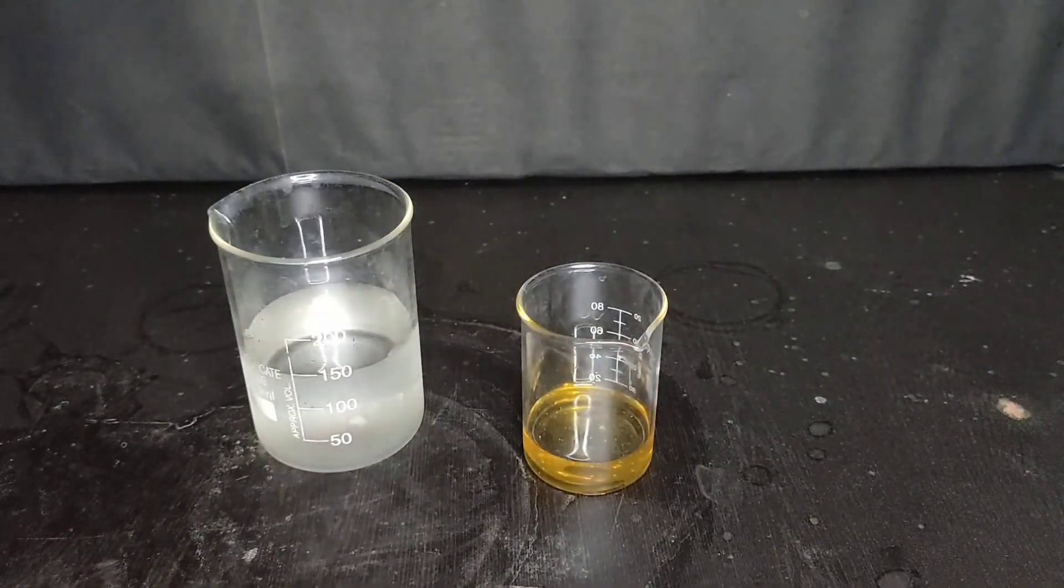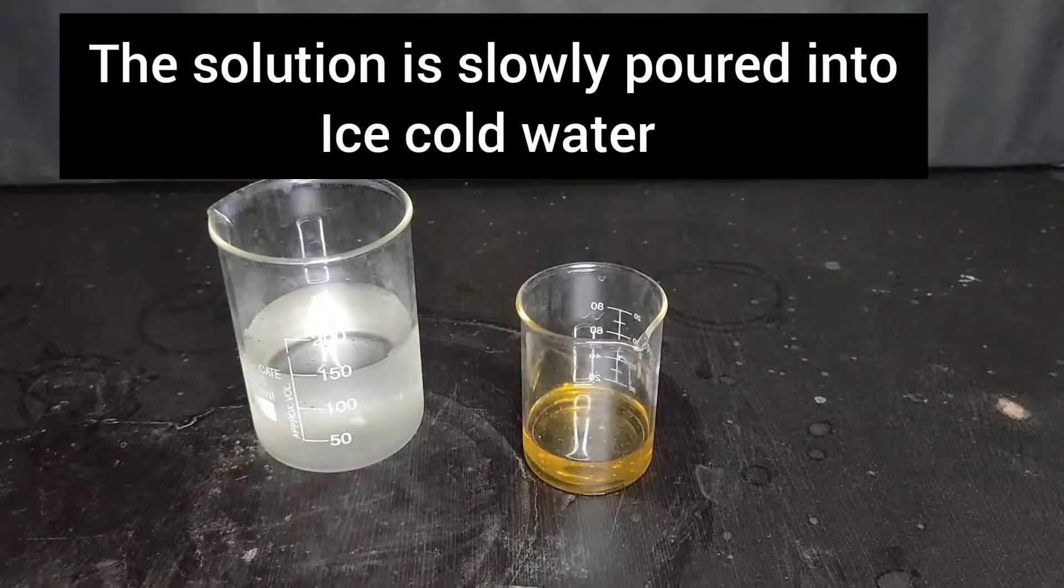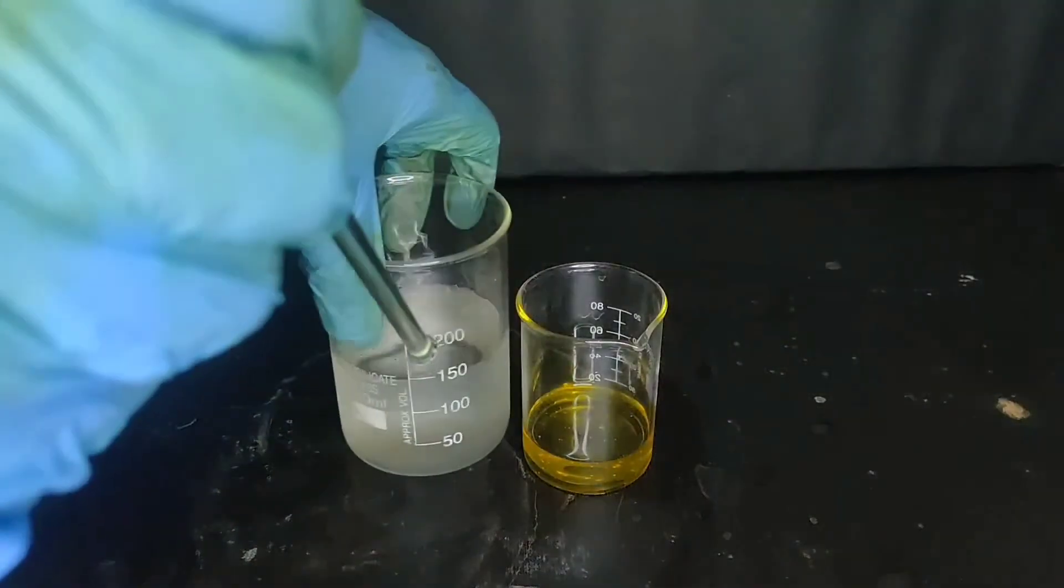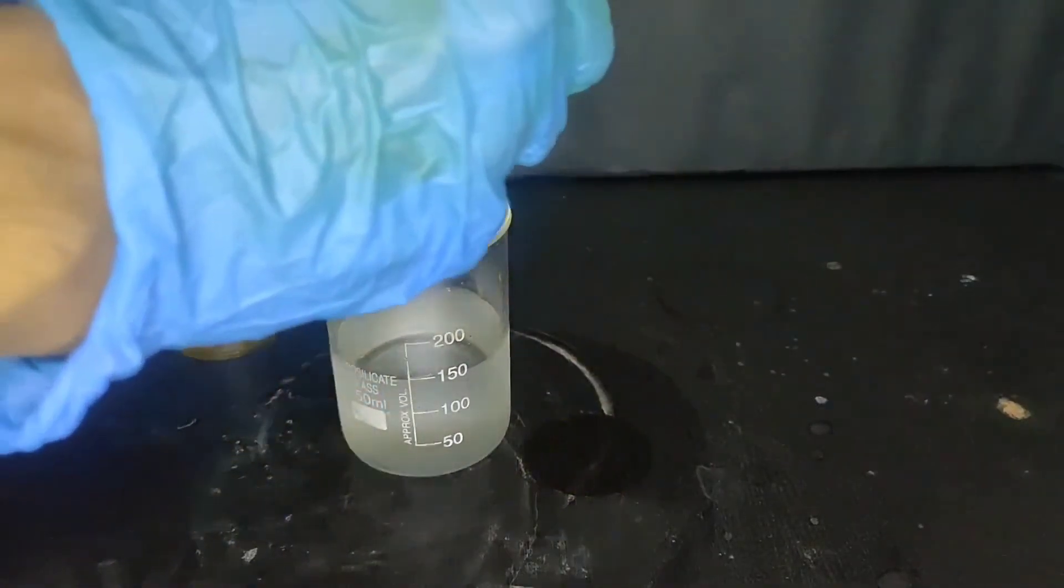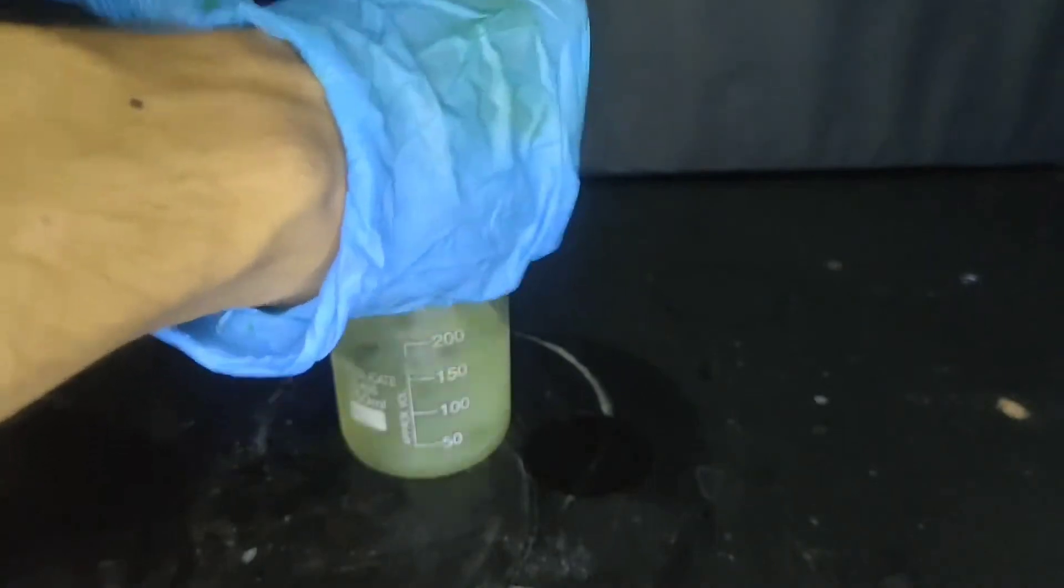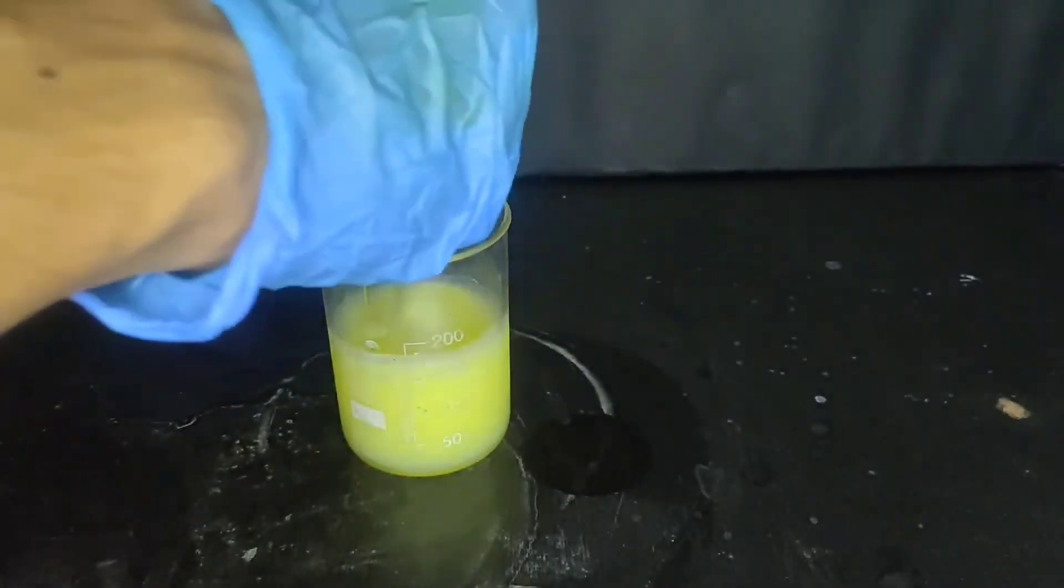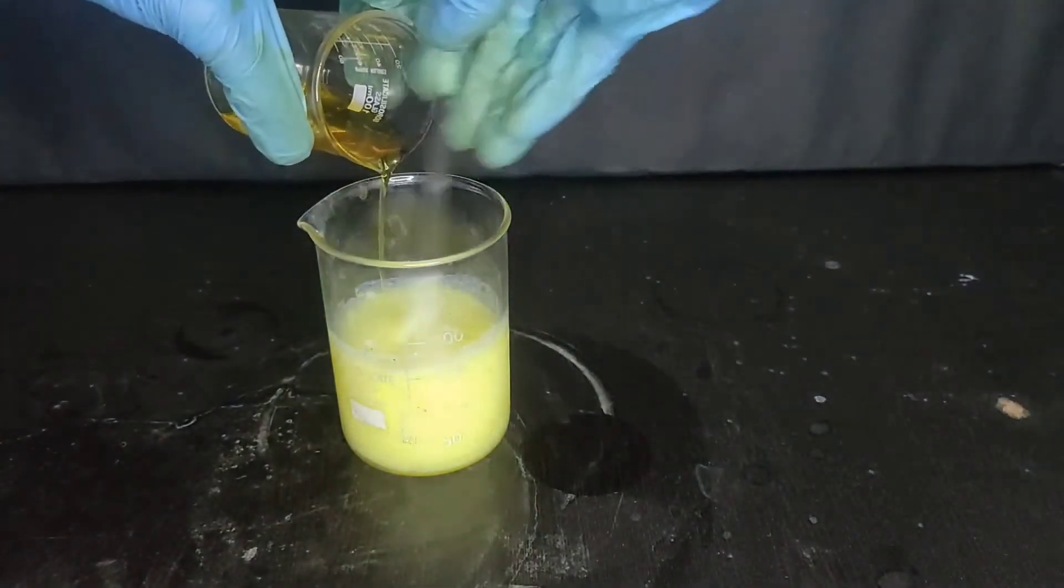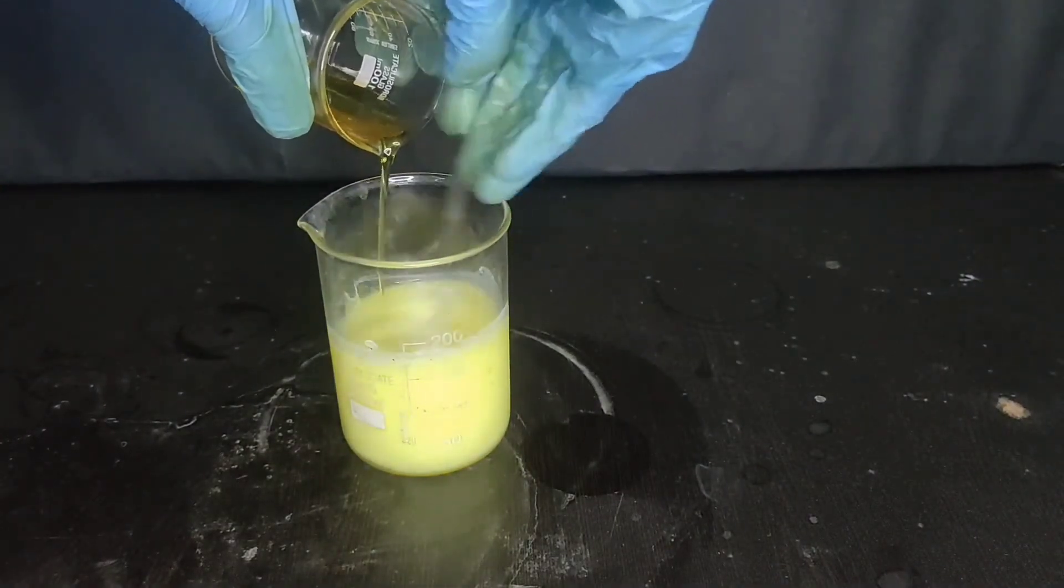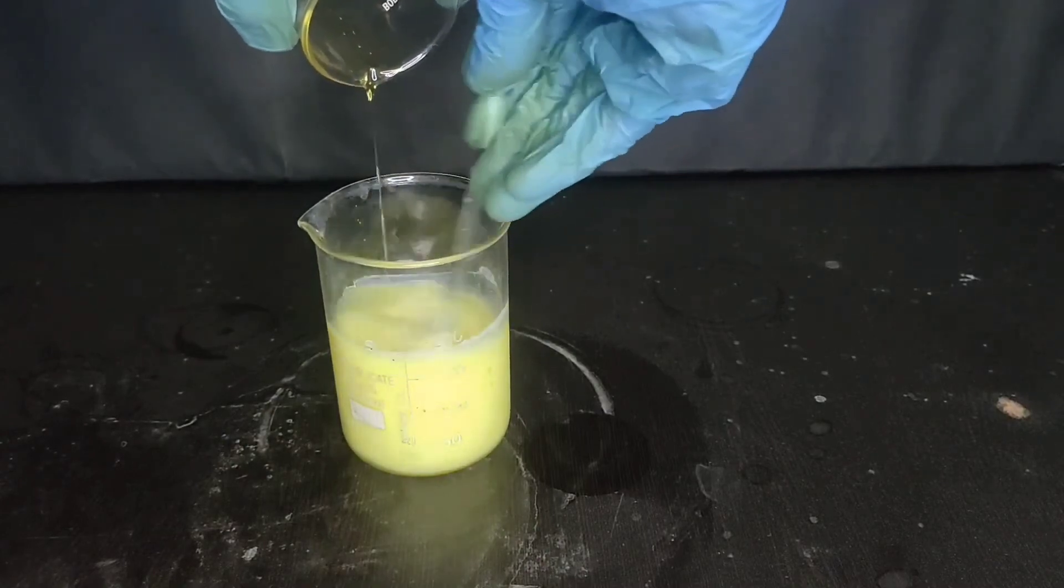After 1 hour, the solution is slowly poured into ice cold water with constant stirring. You can see that para-nitro acetanilide is getting precipitated. The ortho product being more soluble stays in solution.